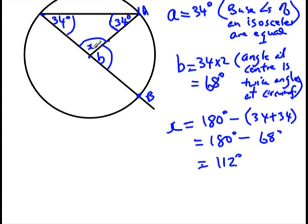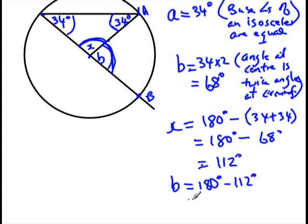Now, angle X and angle B are separated by a straight line. If this straight line didn't exist, they would have formed a semicircle, so X and B added together give us 180 degrees. These are adjacent angles on a straight line. Therefore, angle B equals 180 degrees minus 112 degrees. Since 180 minus 68 is 112, then 180 minus 112 must be 68. So angle B is equal to 68 degrees, just like we found using the angle at the center theorem.